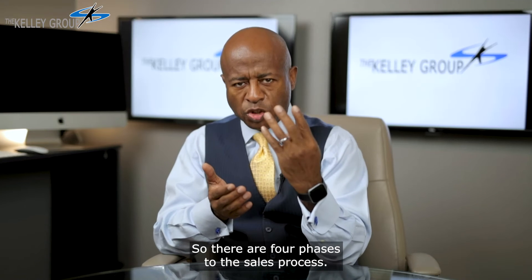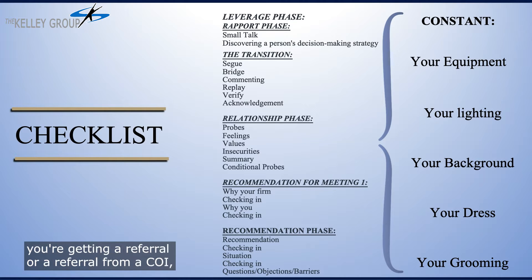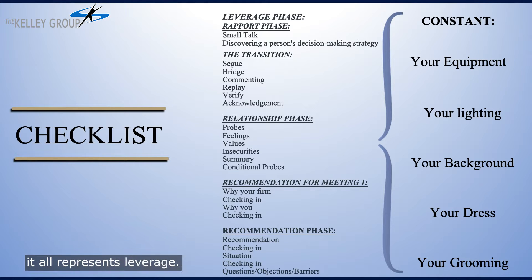There are four phases to the sales process. The first phase is leverage, which means will a person see you. This encompasses all forms of prospecting, whether you're getting a referral or a referral from a COI. It doesn't matter how you connect with someone — it all represents leverage.